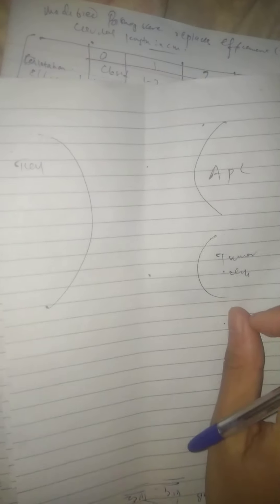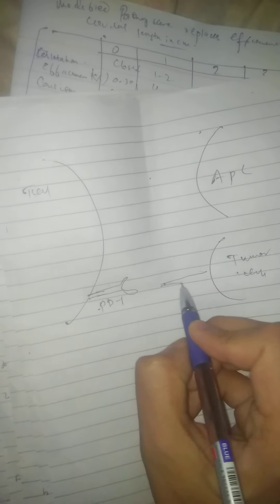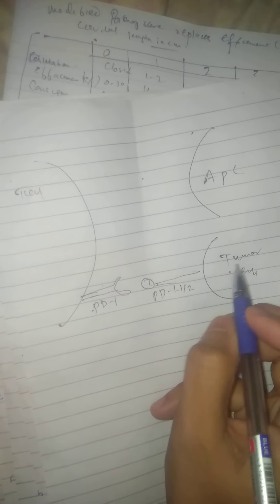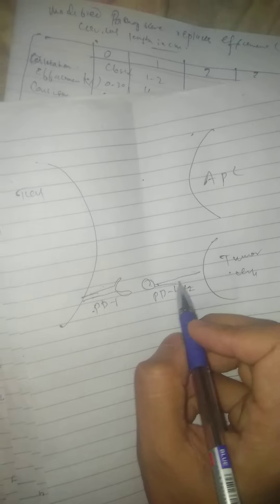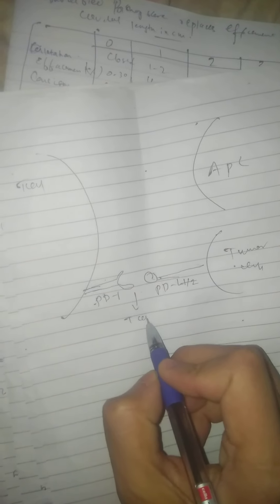I am demonstrating this pathophysiology here because there are several immunotherapies we should know. The interaction between PD-1 on T cells and its ligands PD-L1 and PD-L2, expressed on tumor cells or immune cells in the tumor microenvironment, leads to T cell dysfunction or exhaustion.